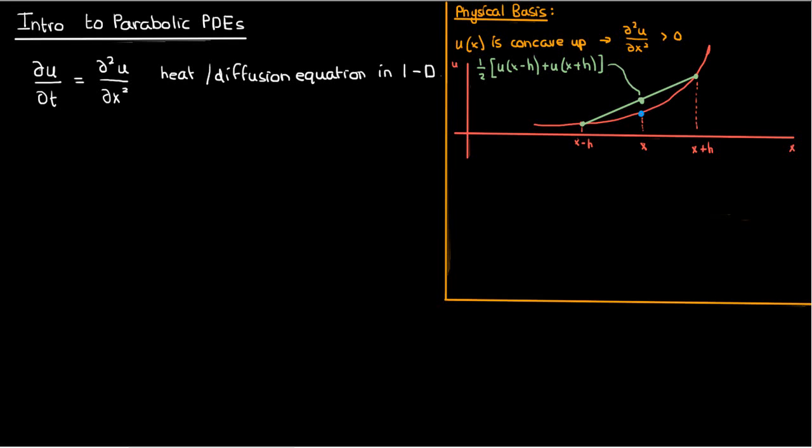the average value of the surrounding points is higher than the value of u at the point x. If we're talking in terms of temperature, then the temperature at x is less than the average temperature at the immediately surrounding points, so we have a relative cold spot at x.